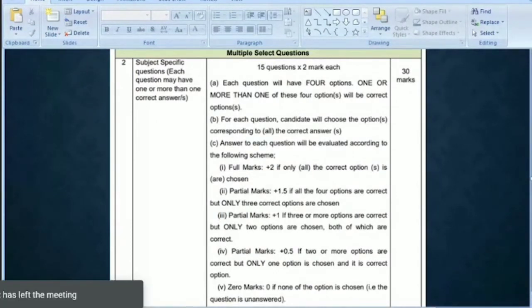Once you give any wrong answer, you will have negative marking. If you leave the question unanswered, there will be zero marks. If you select any wrong answer, minus marks will be awarded. This is how it goes: plus 0.5, plus 1, plus 1.5, and plus 2 for progressively more correct answers selected.